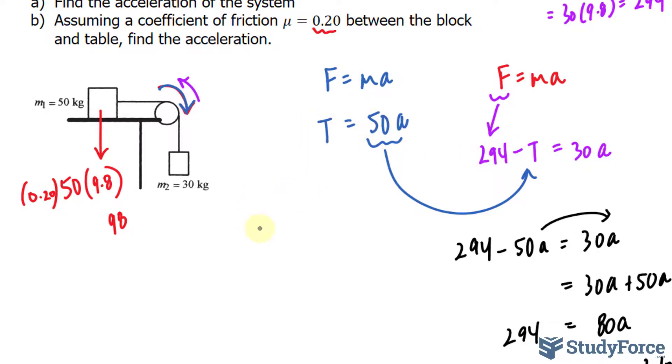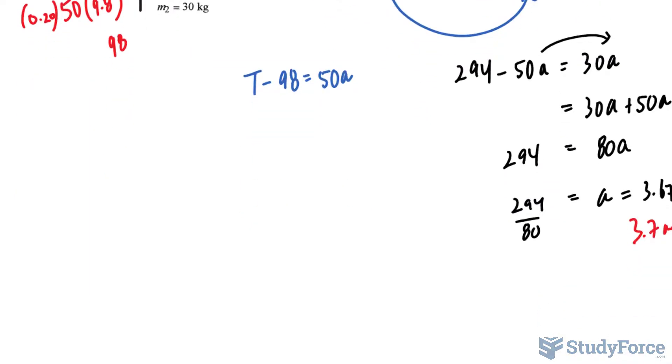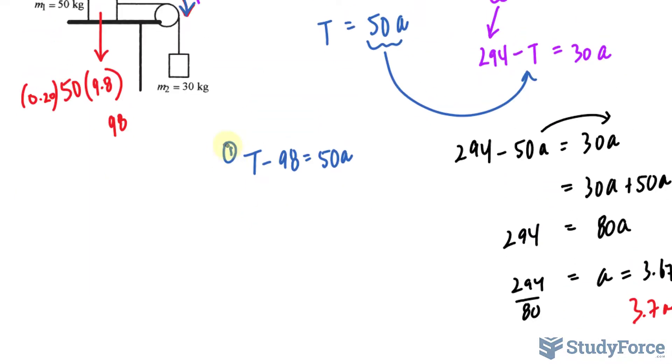But this one will change as T minus 98 equals 50A. And again, we use the techniques we know in mathematics to solve for A. So we have this equation, and again this equation that is unmodified. We solve for T, by bringing that over, we have T equals 50A plus 98. We'll take this expression and substitute it into T.